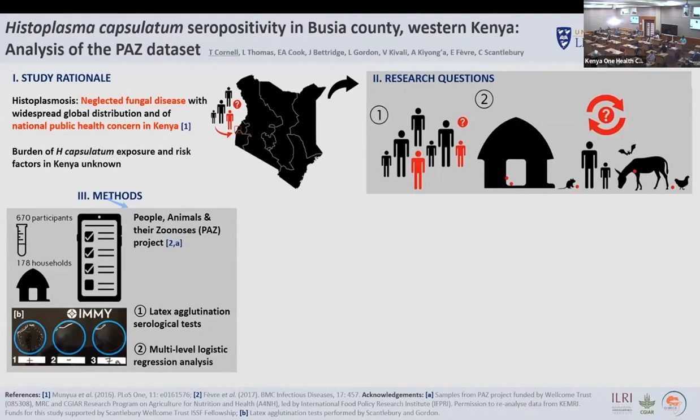A latex agglutination test was performed on 670 serum samples representing 178 households within 18 sub-locations. Potential risk factors associated with Histoplasma exposure were explored using multi-level logistic regression analysis.